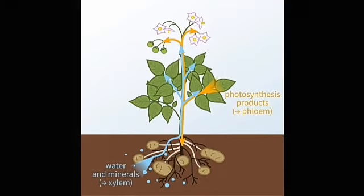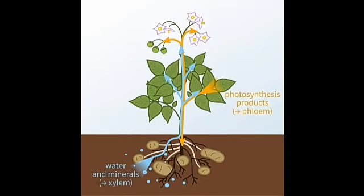Now let us consider the movement of products of photosynthesis in plants. This is called translocation and occurs with the help of vascular tissue called phloem. Phloem is a complex tissue made up of sieve tube, companion cells, phloem parenchyma and phloem fiber.